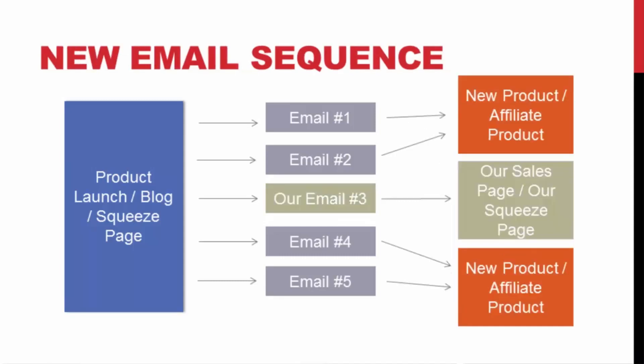What we're going to do is find people who have large email lists inside our niche, contact them, and work with them so they will place our email swipe inside their email sequence. Let's say they're sending out an email every other day — we're going to slip in and see if they'll send out our email on one of those days instead. It's a really simple but very powerful method.